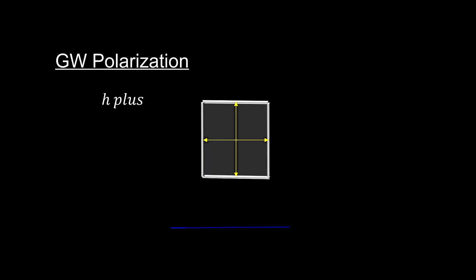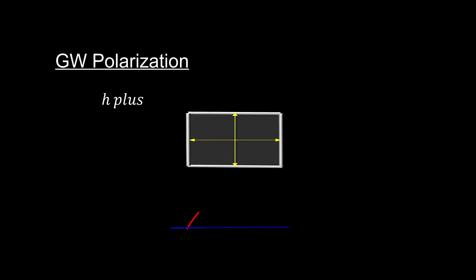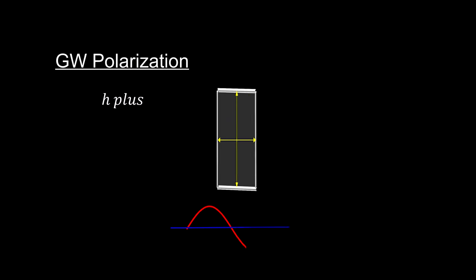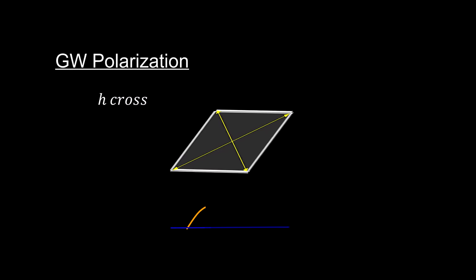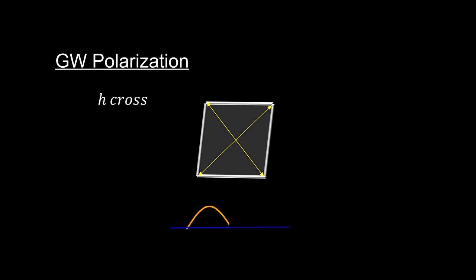Here's an exaggerated look at what an oscillating h plus polarized gravitational wave does to a square plate it passes through. Again, the wave is passing into the page. For an h cross polarized wave, the effect would be similar but shifted 45 degrees.